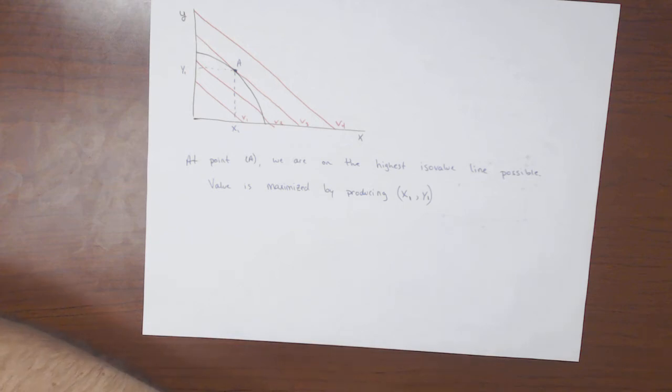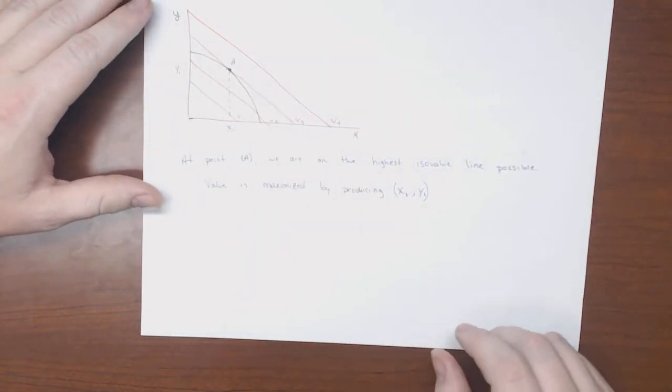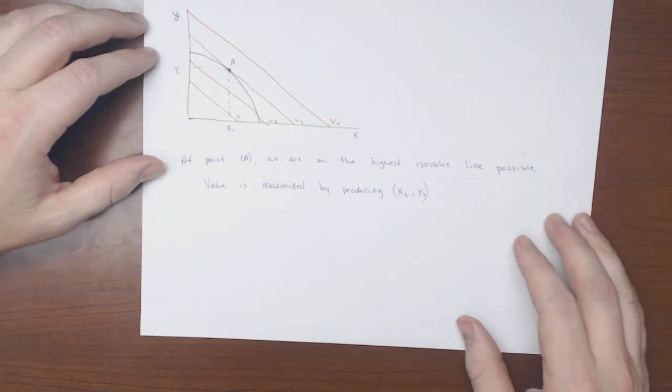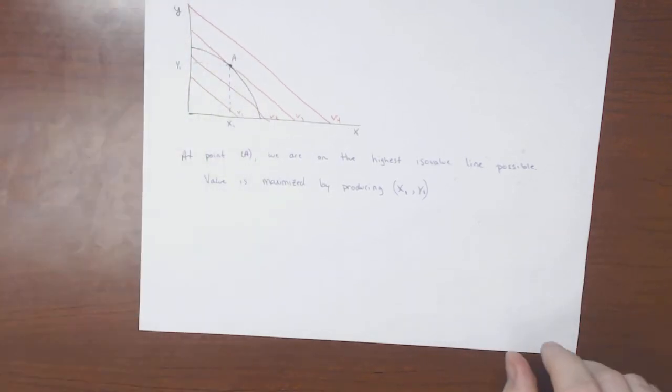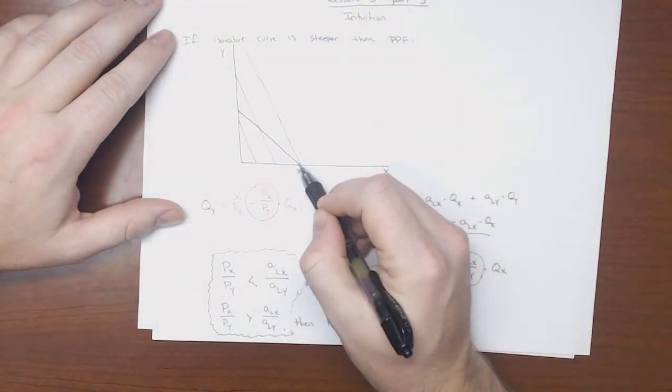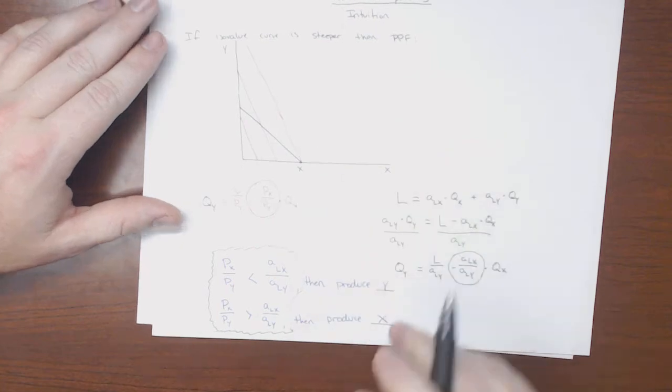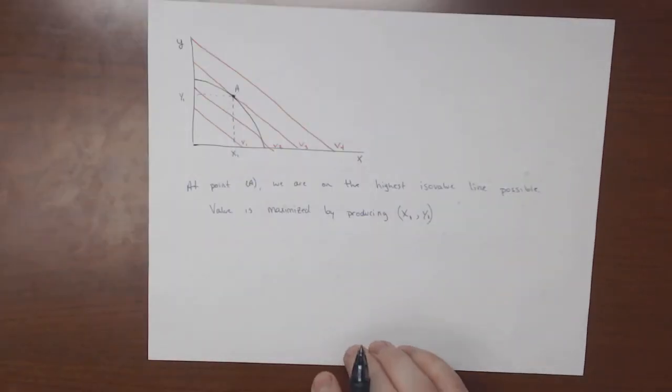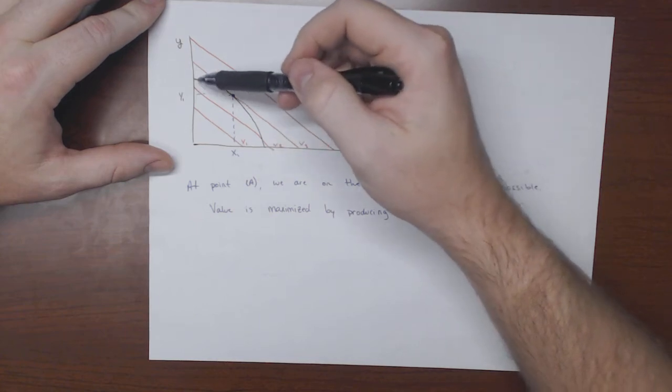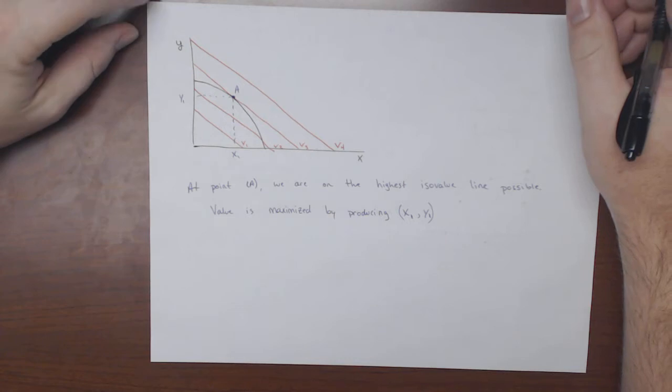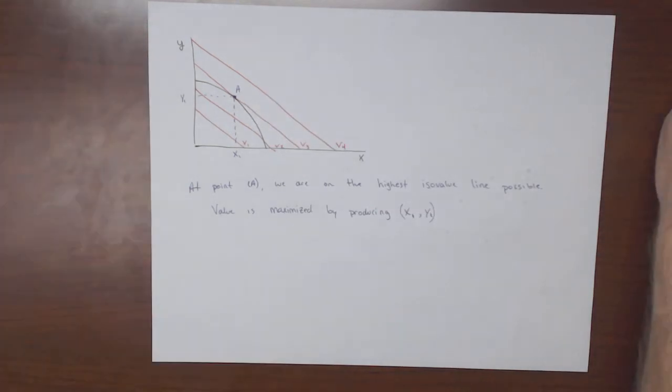So what this says is that value is maximized by producing X1, Y1. This economy will maximize the total value of their products, X and Y, if they produce at this point here, A, which is X1 amount of X and Y1 amount of Y. And so now, notice that what we can do is we can explain why countries would produce more than one thing. It turns out that if they face increasing marginal costs of production, which is a very reasonable thing to assume, then value is maximized at some point on the PPF that is not at one of these corners. So we call solutions like this a corner solution, which means that it is only producing X, or if we were here, we're only producing Y. But in the real world, we don't really observe corner solutions, and that's because the PPF curve is bending down. Increasing marginal costs mean corner solutions tend to be suboptimal in terms of generating value.